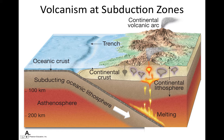Where we left off in class on Thursday, we were talking about plate tectonics, in particular subduction zones, where oceanic lithosphere subducts under another tectonic plate. In this image, we have continental lithosphere. We said that there are several features associated with subduction zones, including the deep ocean trench and arc volcanism. In this case, it's a continental volcanic arc, because it's on continental lithosphere.